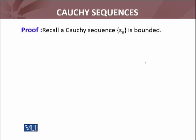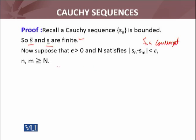Let's do the other way around. Suppose that the sequence is Cauchy sequence, then I have to show that the sequence Sn is convergent. Before doing this, recall that a Cauchy sequence is a bounded sequence. We have already proved this. If it's a bounded sequence of real numbers, it means its limit superior and limit inferior are finite numbers. Now suppose that for epsilon greater than 0, N satisfies this one, which is the definition of the Cauchy sequence.